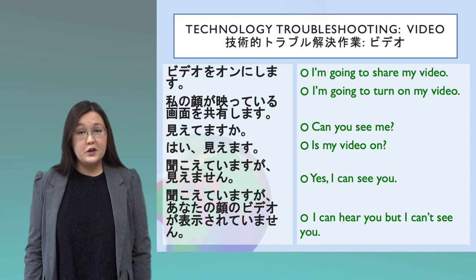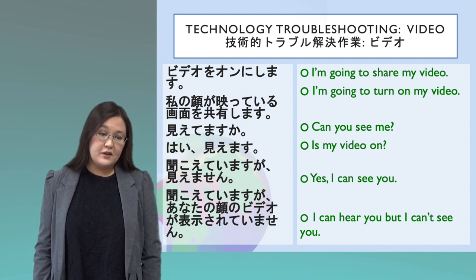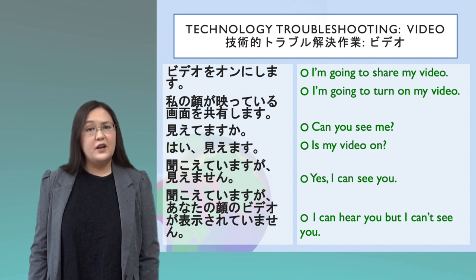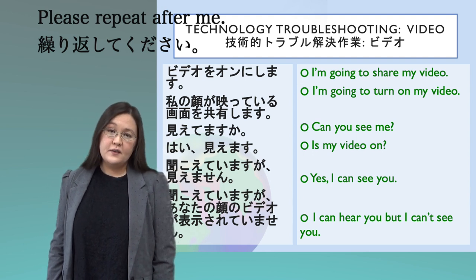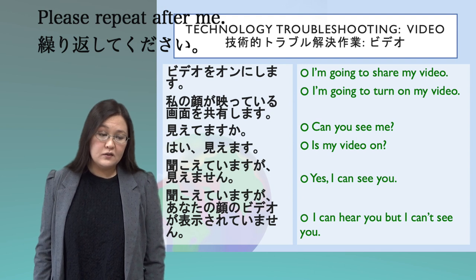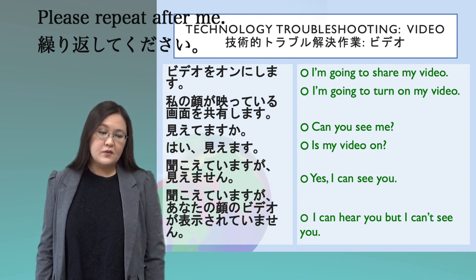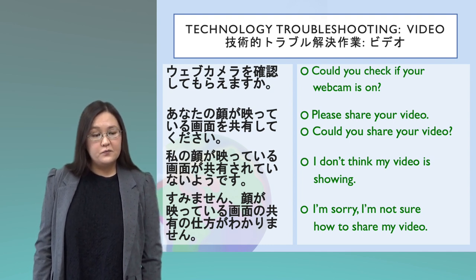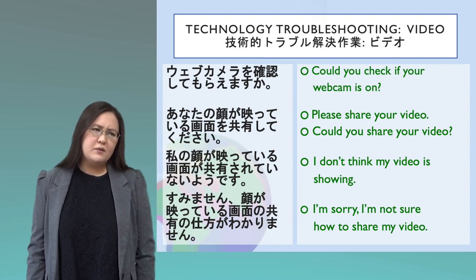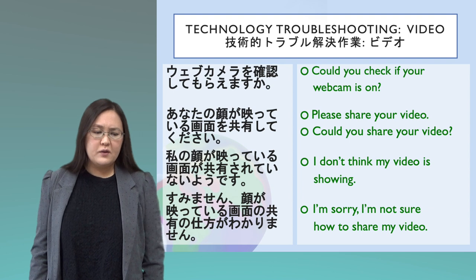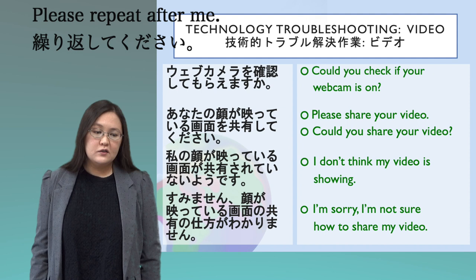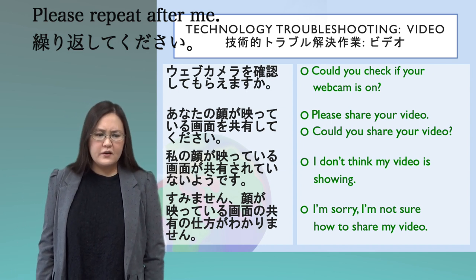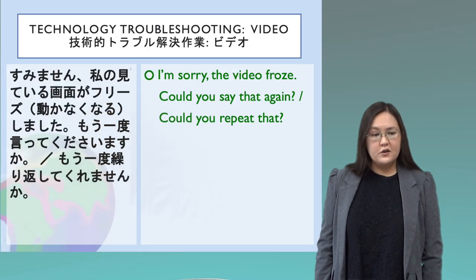Phrases for troubleshooting video issues: 'I'm going to share my video,' 'I'm going to turn on my video,' 'Can you see me?', 'Is my video on?', 'Yes, I can see you,' 'I can hear you but I can't see you.' If the webcam seems off: 'Could you check if your webcam is on?', 'Please share your video,' 'Could you share your video?', 'I don't think my video is showing,' 'I'm sorry, I'm not sure how to share my video.' If the video freezes: 'I'm sorry, the video froze. Could you say that again?'